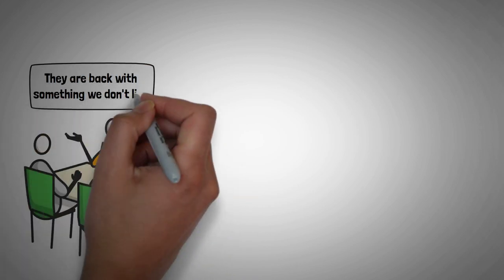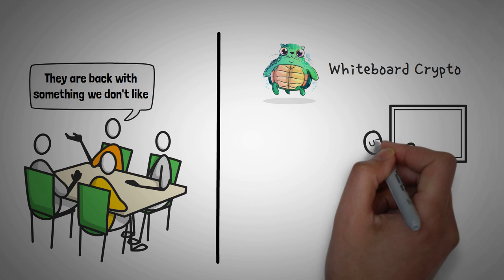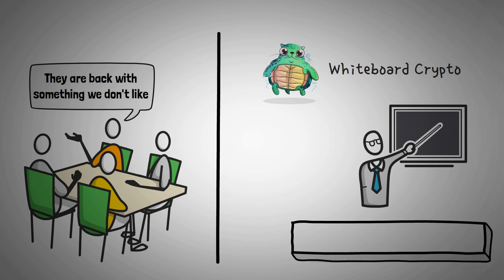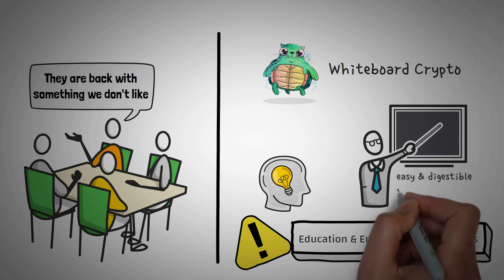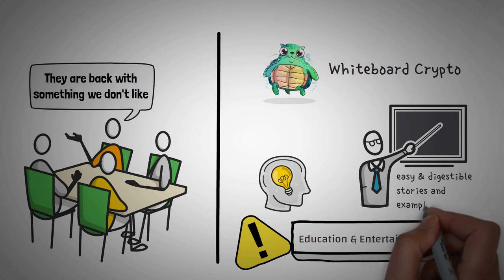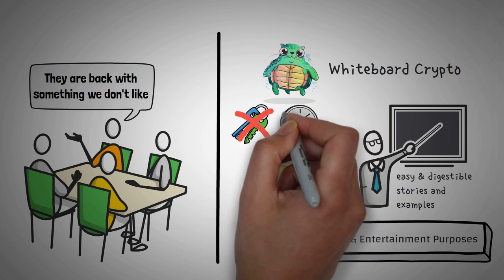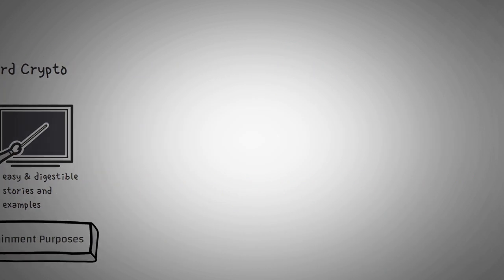Today we have a video that we don't think the big crypto companies are gonna like, but that's okay. Here at Whiteboard Crypto, we do what we want, when we want, and how we want when it comes to educating you guys about complex crypto topics. This video was made for educational and entertainment purposes only. Anything you do outside of this video is on you. We just want to help you make the most educated decisions. Welcome to Whiteboard Crypto, where we explain complex cryptocurrency topics using stories, examples, and analogies. Today we're gonna talk about the famous term: not your keys, not your crypto, and we're gonna explain how you can have the best privacy and anonymity that the crypto universe offers.